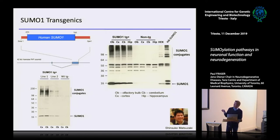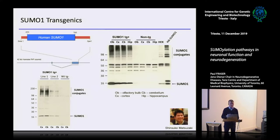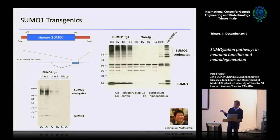We found that SUMO1 was expressed throughout the brain — hippocampus, cerebellum, cortex, olfactory bulb — actually very high in the olfactory bulb where, surprisingly, you get a lot of pathology in Alzheimer's disease. This work was done by a visiting scientist from Osaka, Shinsuke Matsuzaki.